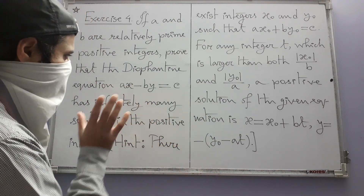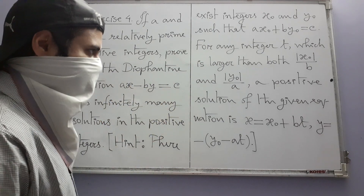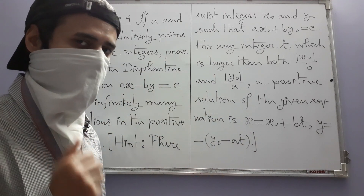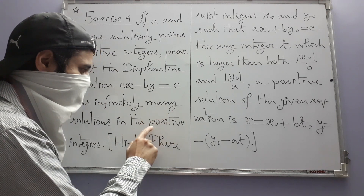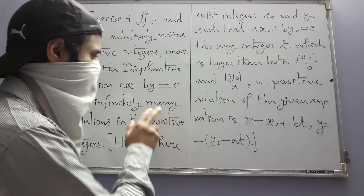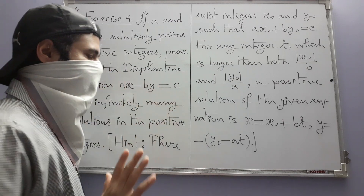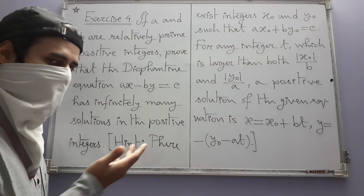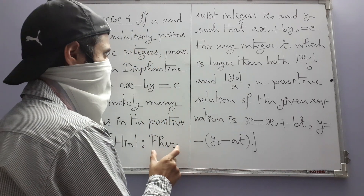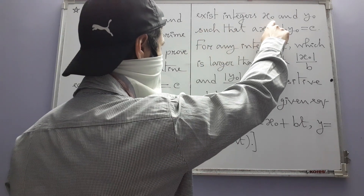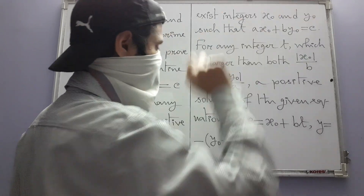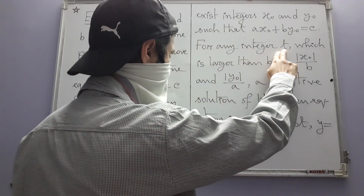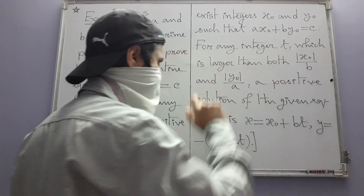Keep in mind that here we are not trying to show that there are infinitely many solutions in general — that already follows from theory — but we are trying to prove that there are infinitely many positive solutions, in the sense that in each such solution both x and y are positive. The hint first of all says that there exist integers x-naught and y-naught such that the equation is satisfied, and then for any integer t which is larger than both of two specified rational numbers...